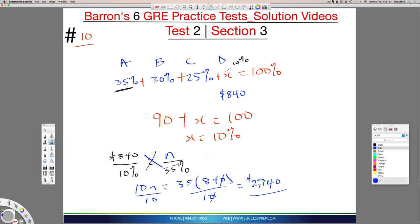So the answer is 2940, which is a grid-in number. It's a self-response answer. So you just throw in the 2940 as your answer.